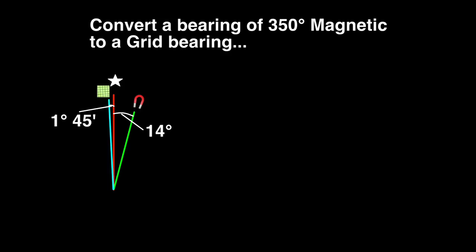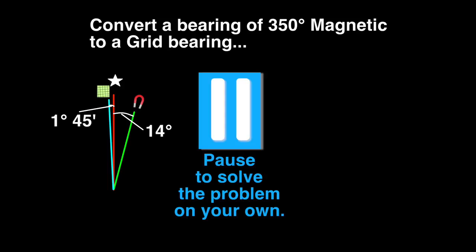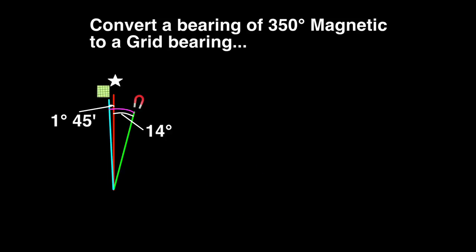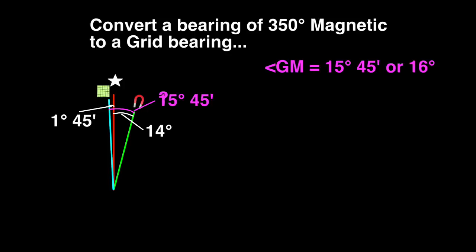Problem 5. Convert a bearing of 350 degrees magnetic to a grid bearing. Magnetic north is 14 degrees east of true north. Grid north is 1 degree 45 minutes west of true north. The angle between grid north and magnetic north is the 14 degrees from magnetic to true, plus the 1 degree 45 minutes from true to grid. That would be 15 degrees 45 minutes, which will round up to 16 degrees.